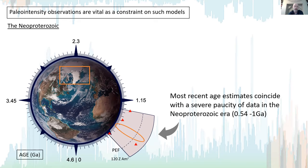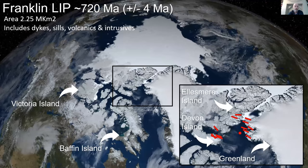This study aims to help address that by looking at rocks from high Arctic Canada and Greenland. We've been looking at rocks from the Franklin Large Igneous Province, an event which took place around 720 million years ago and covered a vast area of well over 2 million square kilometers, including dikes, sills, volcanics, and intrusives. We're focused mainly on dikes from Ellesmere Island, Devon Island, and Greenland.